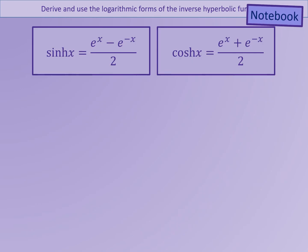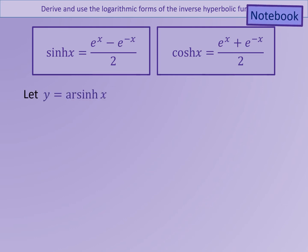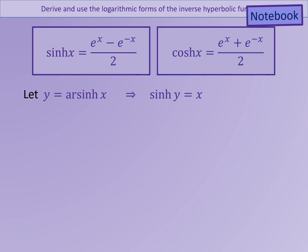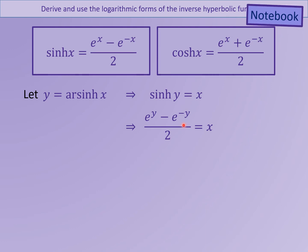We have previously seen that the functions sinh x and cosh x are written in terms of exponentials. We're going to see whether we can write the inverse sinh and inverse cosh functions in a similar way. We're going to start by letting y equal the inverse sinh of x. We can now take sinh of both sides, which gives us sinh y on the left and just x on the right, because sinh and inverse sinh are inverses of each other. We can replace sinh y with the exponential expression: e to the y minus e to the minus y, all over 2.